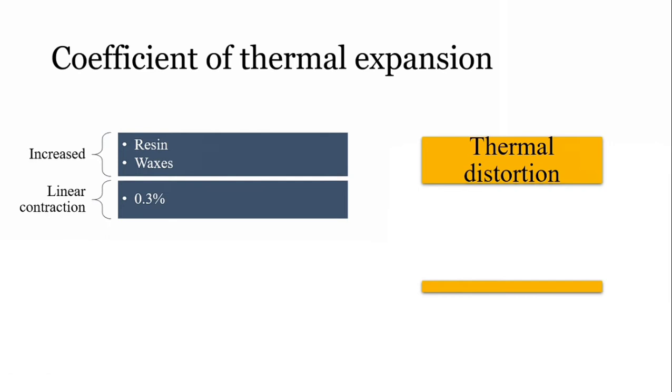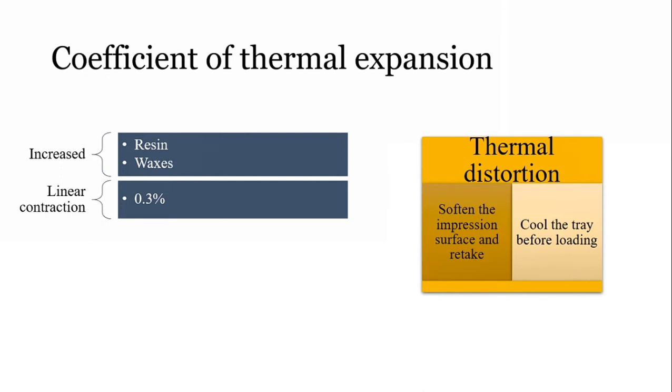Thermal distortion can be reduced in impression compound by two techniques. First, once you take the impression out, heat the impression surface alone—the surface that recorded the tissue details. Keep it in the mouth again, do all the tissue movements, and record the impression again. This ensures less shrinkage and more accuracy. Alternatively, you can cool the tray so that the impression compound in contact with the tray cools faster, allowing you to take it out without much distortion.